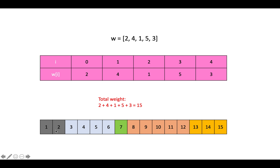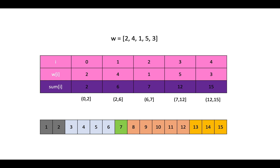Basically, we randomly pick a number from 1 to 15. For example, if we pick the number 9, it means the index we pick is 3, because index 3's weight is 5 and we mapped it from 8 to 12. This is the core idea. First, we should build a prefix sum array — the accumulative sum of the weights. Sum[0] equals weight[0] which is 2, sum[1] equals w0 plus w1 which is 6, and sum[2] is the accumulate sum of the previous weights.